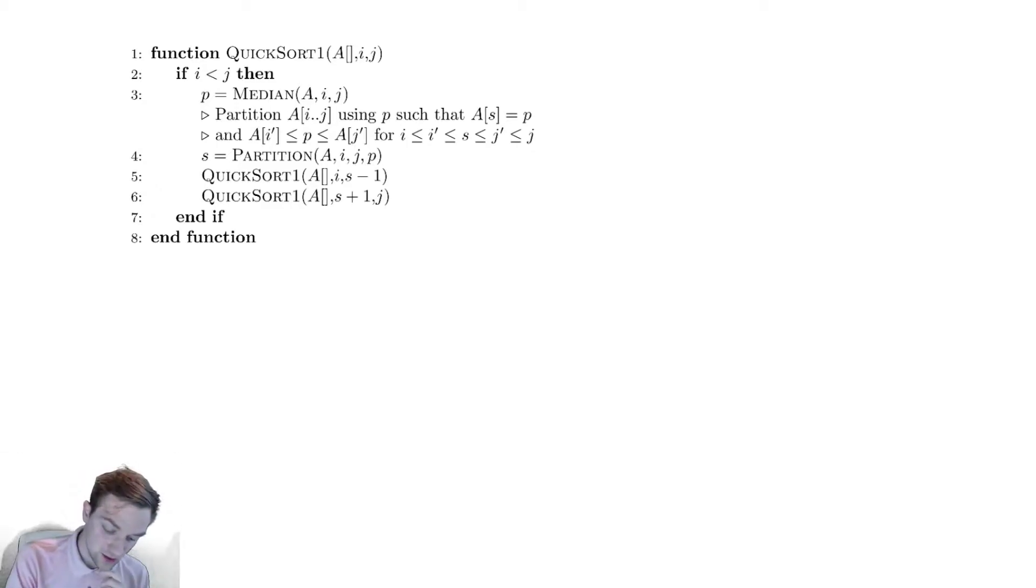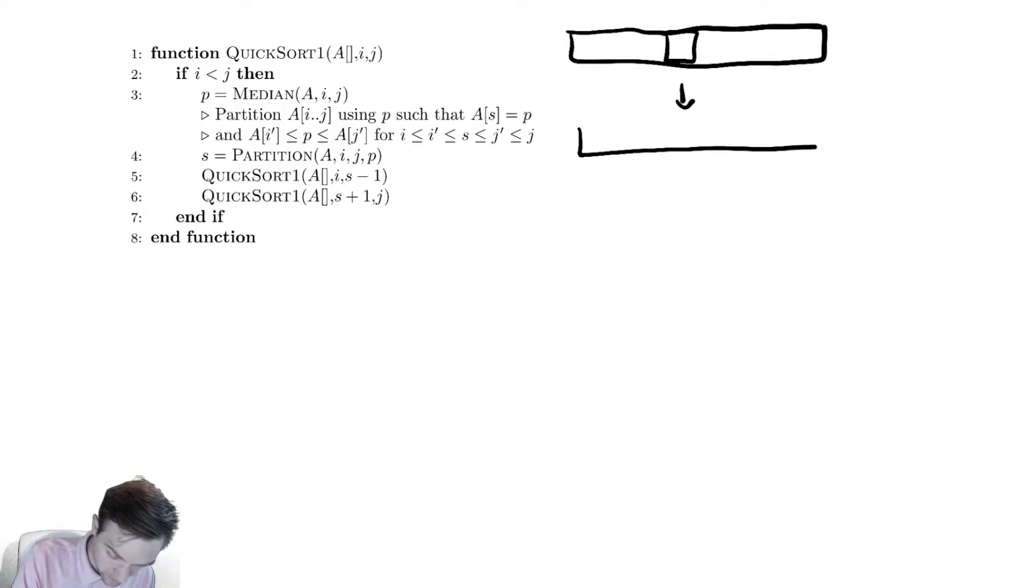For this implementation, we are going to first find the median element of the array. We are then going to partition the array around that median element and then sort the two halves. So we find the median element of an array who knows where it is. We then partition the array so that that median element, which we call p, is in the correct location. Everything on the left must be less than or equal to p. Everything on the right must be greater than p.